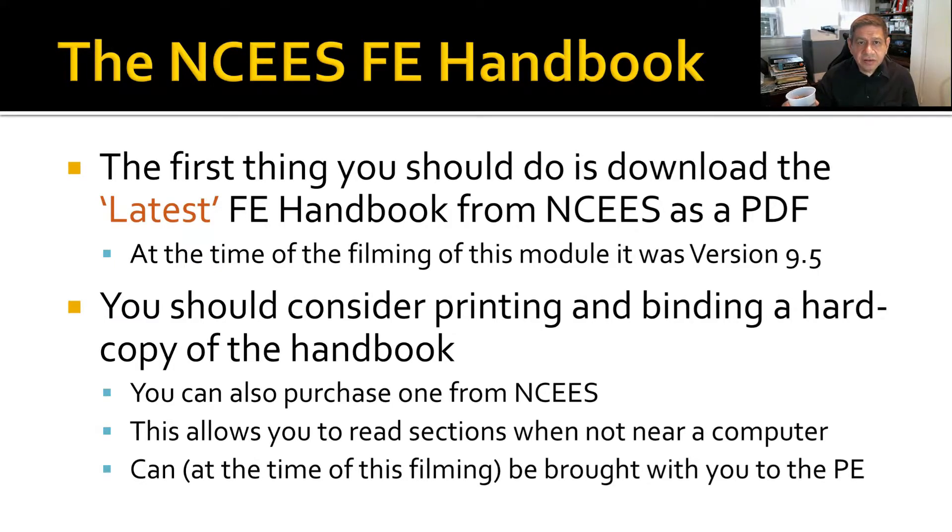The NCES FE Handbook. The first thing you should do is download the latest FE handbook from NCES as a PDF. And at the time of this filming of this module, it was at version 9.5. You should also consider printing and binding a hard copy of the book. You can also purchase one of the hard copies from NCES. They'll give you a nice bound copy of it at a cost, but you can just easily download it and print it out. This allows you to read sections when you're not near a computer. And at the time of the filming of this video, it can be brought in with you to the PE exam a few years down the road or next month if that's the way it works out for you.